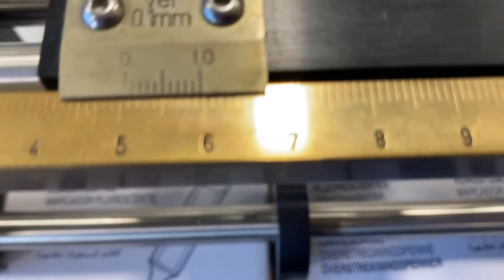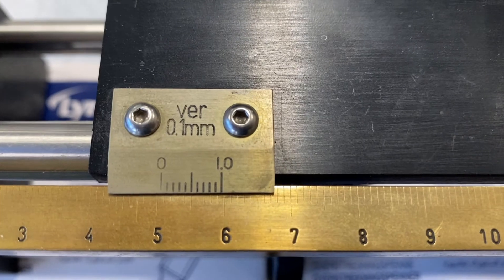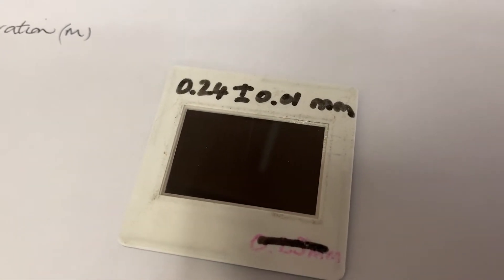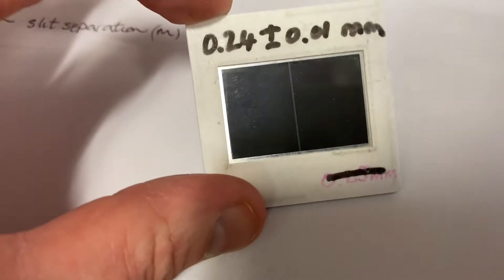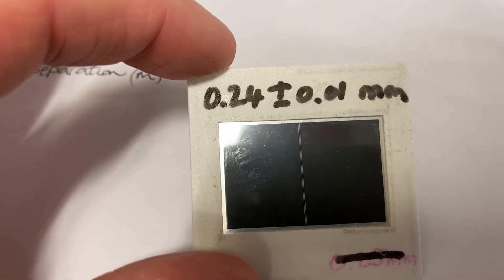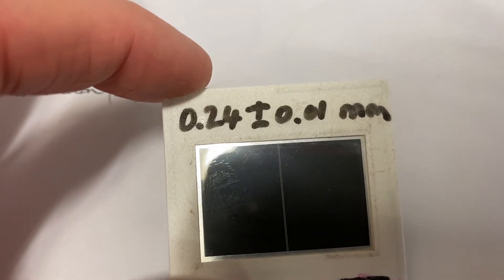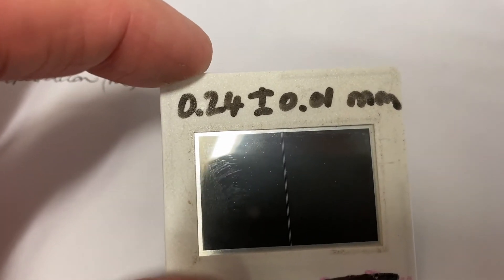There it is. That's what I see when I look through the microscope. By moving the microscope, I can measure that distance very precisely on that little scale there. With my travelling microscope, I've now measured the distance between the two slits. It's 0.24 millimeters plus or minus 0.01 millimeters. That's my uncertainty in measuring that.